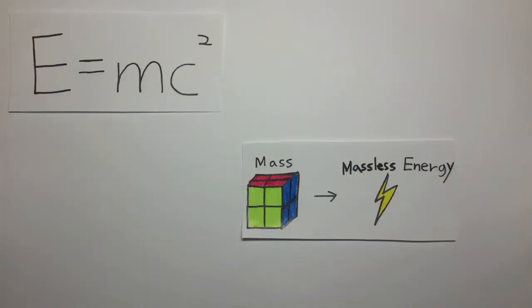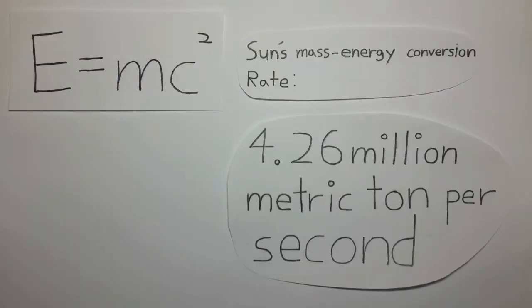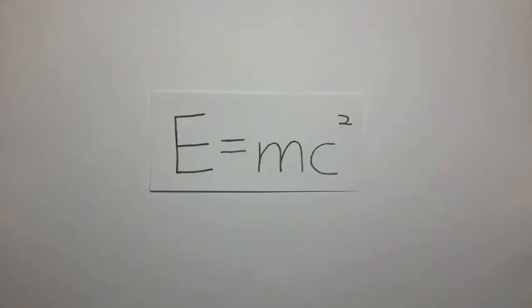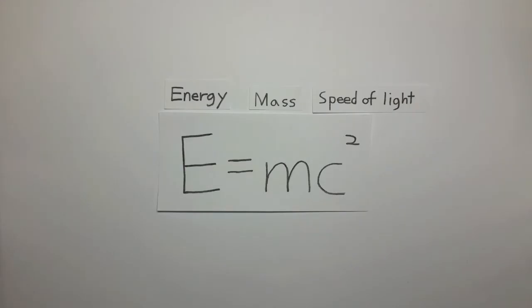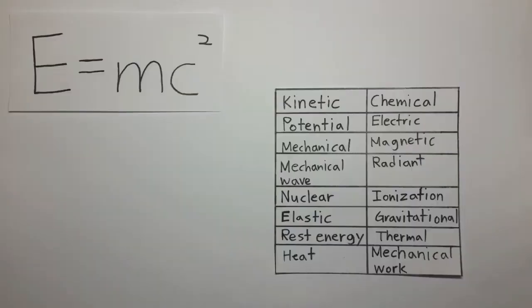E equals mc squared explains the mass being converted into energy. The sun releases energy at the mass energy conversion rate of 4.26 million metric tons per second. The relativistic energy expression, E equals mc squared, is a statement about the energy an object contains as a result of its mass.